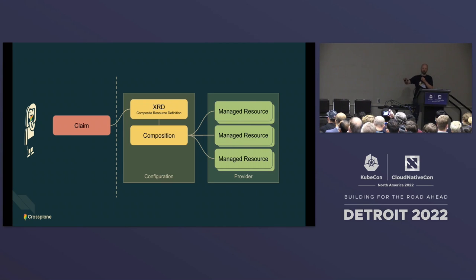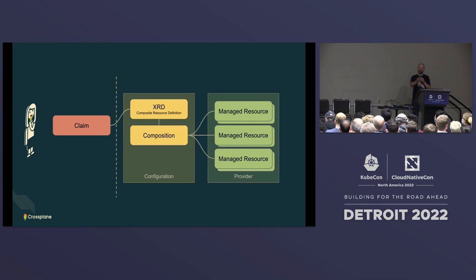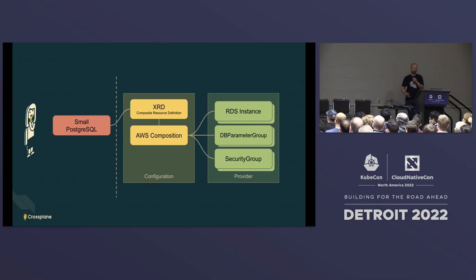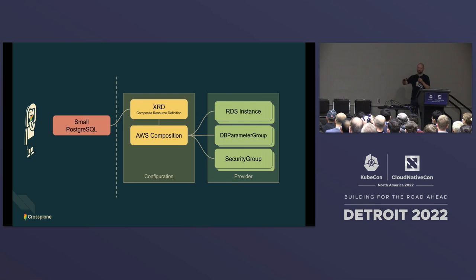Conceptually, you have these managed resources that Jared talked about, all bundled into a provider — an AWS provider, GCP provider, et cetera. You compose them together and offer the API with an XRD, and the developer claims it with a specific typed claim you have defined. As an example, a developer would say, 'I would like a small Postgres instance,' and the XRD defines what that looks like. A specific AWS composition then takes that and configures it as a platform developer would put it together.